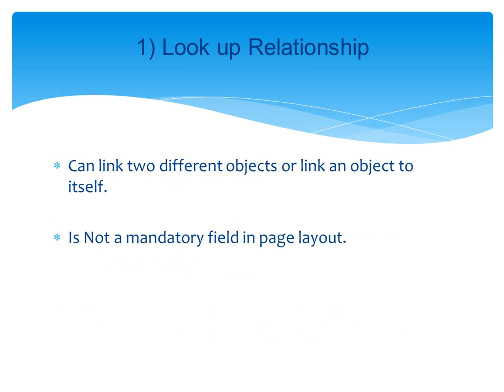Lookup relationship establishes a one-to-many relation between objects. It links two different objects or links an object to itself. It is not a mandatory field. For example, an application called Recruiting has two custom objects: Position and Job Application. Suppose these objects are linked by using a lookup field in the Job Application object — a position can have multiple job application requests, or there may not be any job application at all.